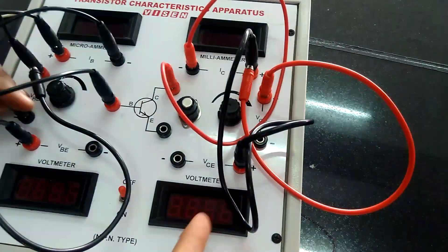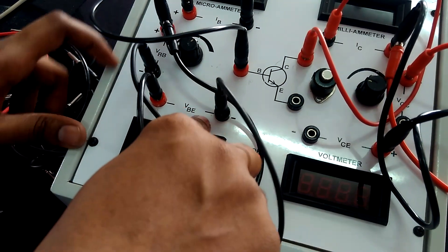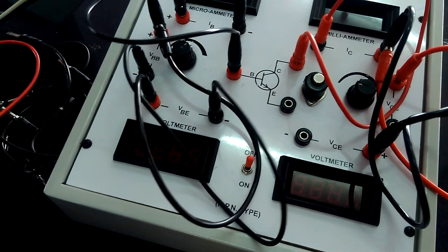Then negative of IB to the negative of VB to the negative of VBE is joined and take another wire.